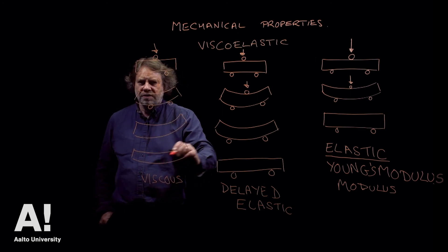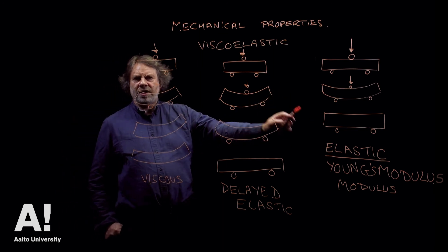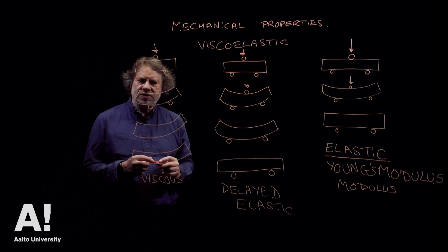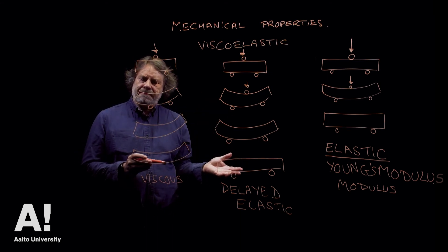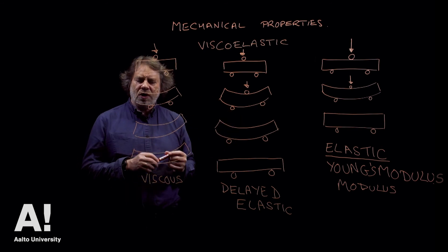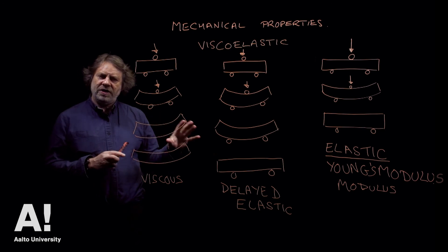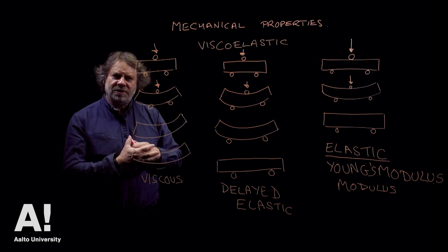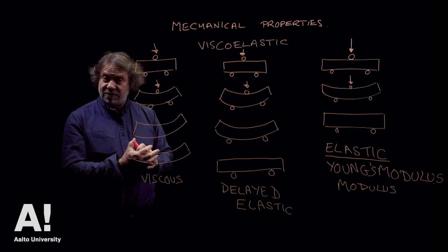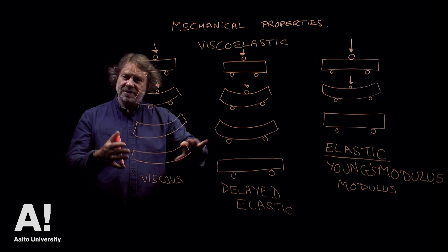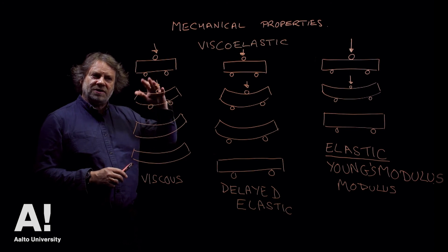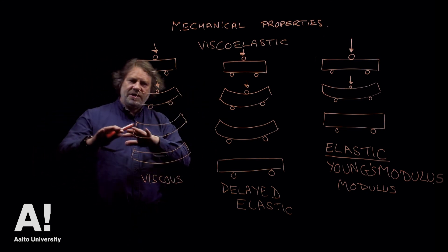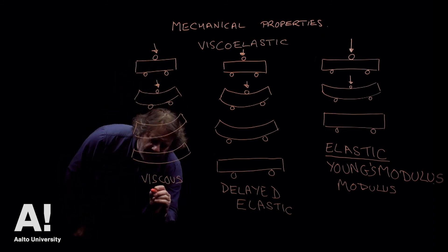That permanent change of shape is viscous behavior. Wood can display all three of these types of behavior, which makes it slightly more complicated than many materials used in construction. It's well understood but needs to be considered when designing structures. If you look at very old wooden buildings, you'll quite often see they are interesting shapes — not necessarily straight lines — which makes them rather attractive. They probably weren't built like that; it's just that over a long period of time this deformation has taken place due to constant load. Look at roof beams — old buildings often have roofs that are slightly curved. That type of behavior is also referred to as creep.